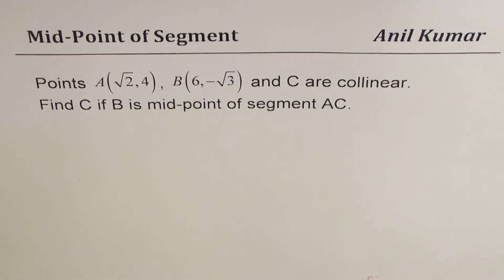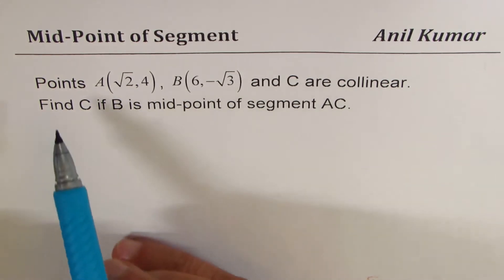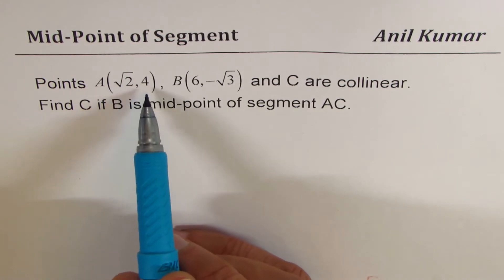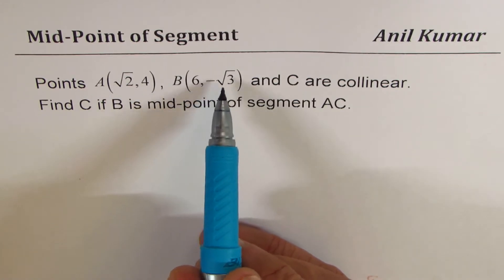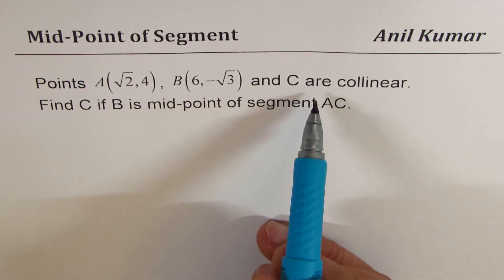I'm Anil Kumar, here is a question relating to midpoint of a segment. Let me thank the subscriber who posted this question. The question is: points A(√2, 4), B(6, -√3), and C are collinear. Find C if B is midpoint of segment AC.